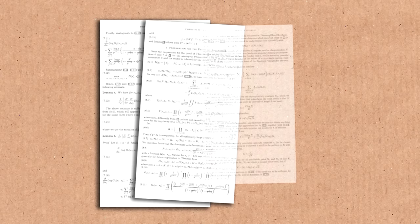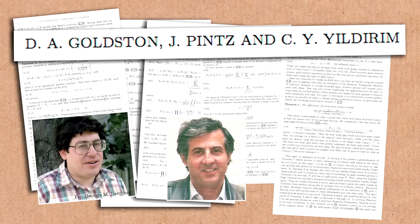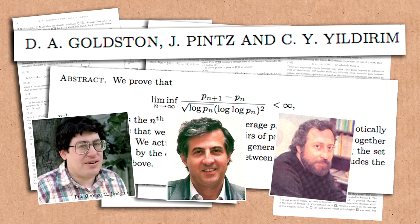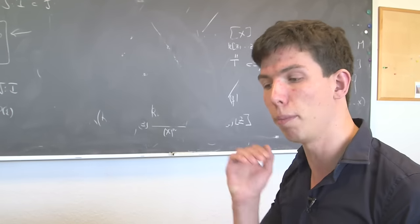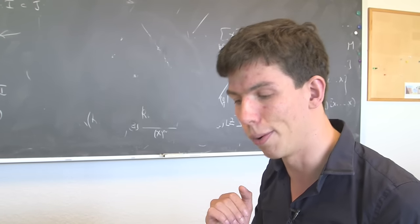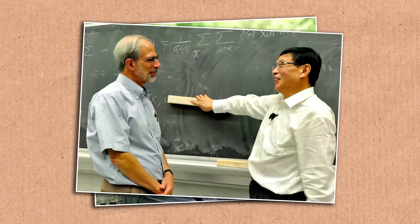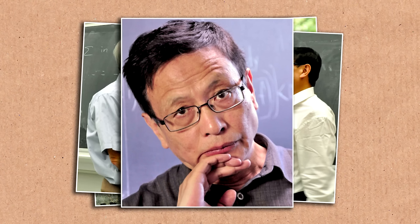Earlier, around 2005, there was this work of Goldston-Pintz-Yıldırım, who came up with a new method for thinking about the twin prime conjecture and problems related to it. People worked really hard to push their ideas further, but there seemed to be this big obstacle we kept not being able to make progress on. It was this problem which Yitang Zhang managed to break through. It came as a complete shock to everyone, precisely because people had worked so hard on this approach and all the experts had been completely stumped.